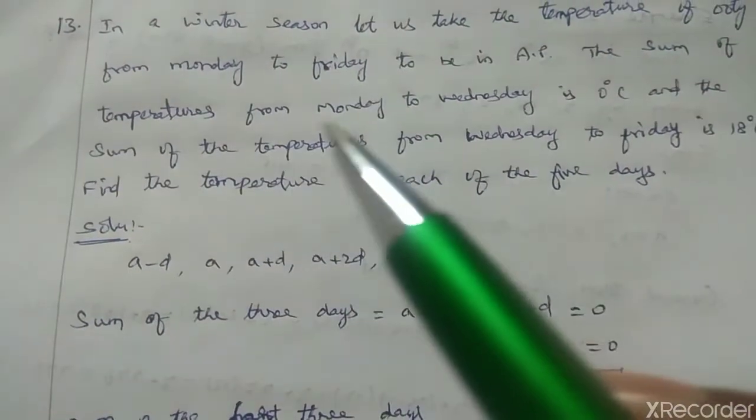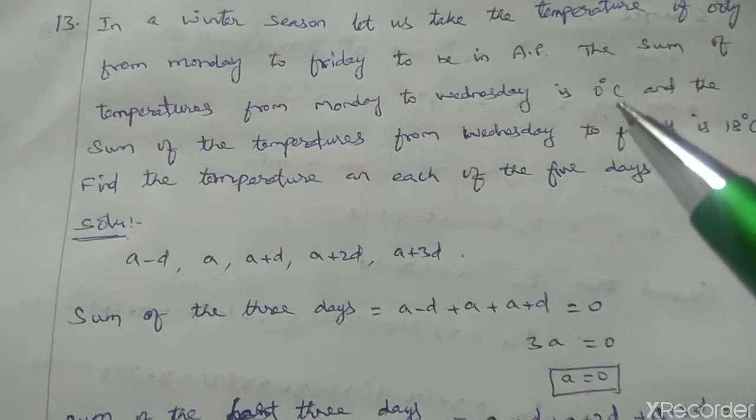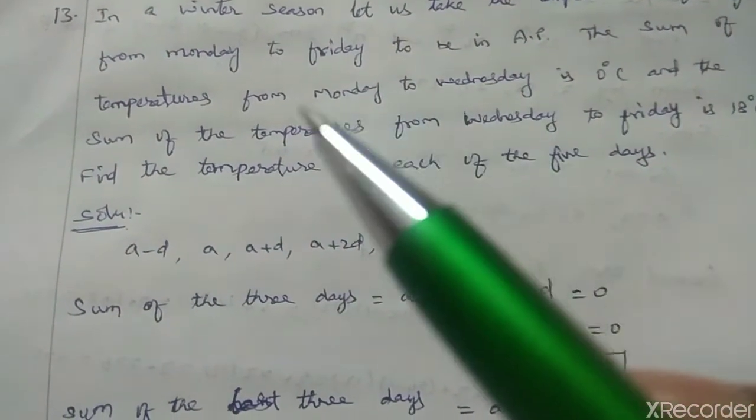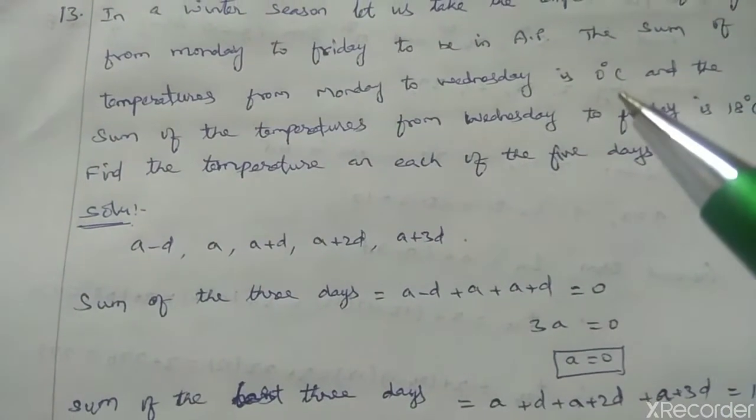The sum of the temperatures from Monday to Wednesday is 0 degrees C. Monday to Wednesday, 3 days, sum of the 3 days equal to 0 degrees Celsius.